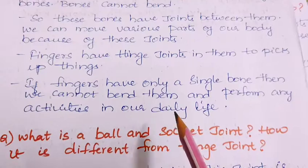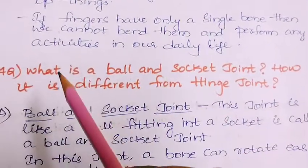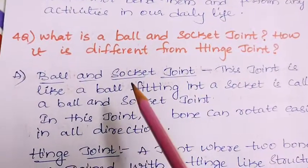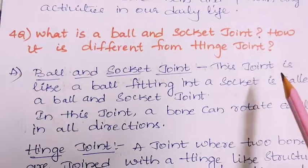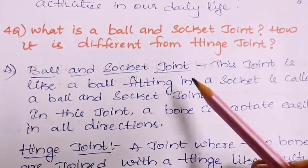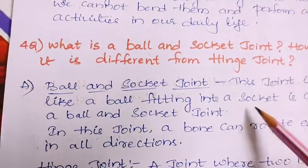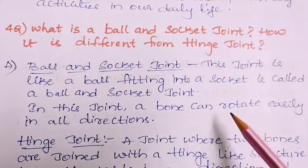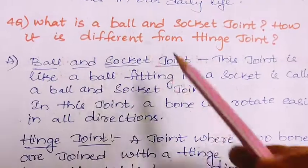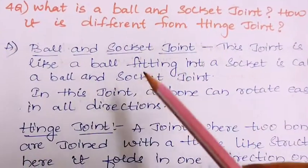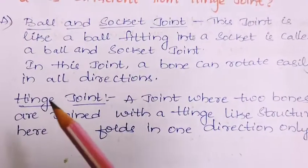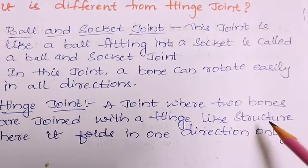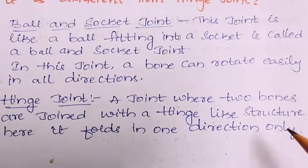Fourth question: what is a ball and socket joint and how is it different from a hinge joint? A ball and socket joint is like a ball fitting into a socket. In this joint, a bone can rotate easily in all directions. A hinge joint is where two bones are joined with a hinge-like structure — it folds in one direction only, it can open and close.